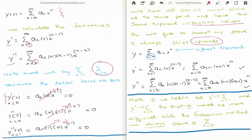Looking at the zeroth, first, and second derivatives, x to the n is the highest power; we have x to the n−1 and x to the n−2. We can shift the first and second derivatives up to x to the n, and the power series will start at n=0. Note: if we hadn't let y′ start at n=1 and y″ start at n=2, the shifting would be more difficult. With regular power series solutions we always move indices up as we differentiate, but with the method of Frobenius we always start at zero because those other terms are non-zero.